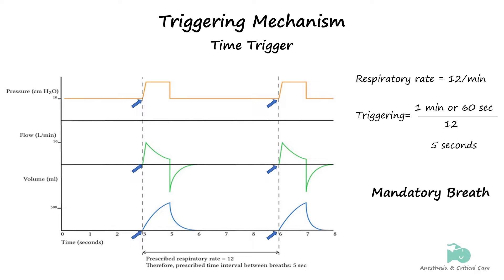All other trigger mechanisms permit the patient to have some control over the timing of inspiration. This was the default setting in earlier ventilator models which did not permit the patient to take breaths beyond the set rate. Most modern ventilators allow patient triggering and take some effort to synchronize their mandatory breaths with patient effort.